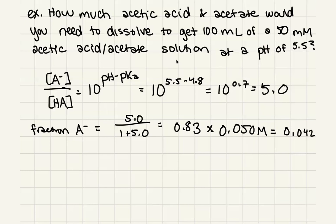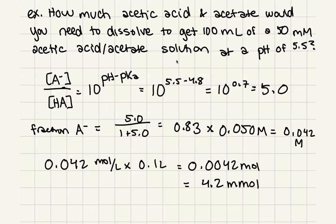And now we just need to know our moles. So what we're going to do is take that concentration, our 0.042 moles per liter, times our volume, times 0.1 liter, which is going to give us 0.0042 moles, which we could also write as 4.2 millimole. So that's how much we're going to need of our acetate.